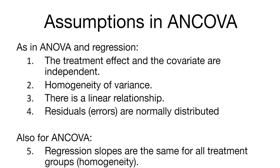Also for analysis of covariance, we assume that the regression slopes are the same for all of the different treatment groups — we call these homogeneous slopes. That is, the slopes for all the different groups we analyze are going to be equal for some covariate that we're interested in. This idea of homogeneity of regression slopes is essential, and we'll spend more time learning about it as it applies to the analysis of covariance.